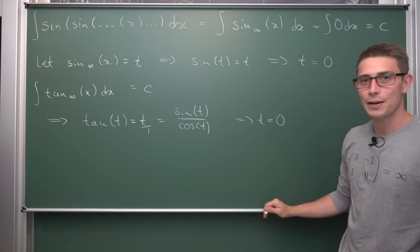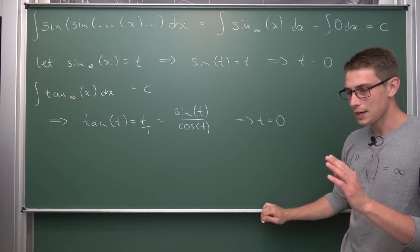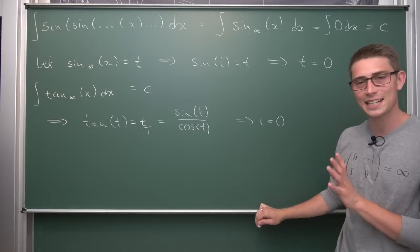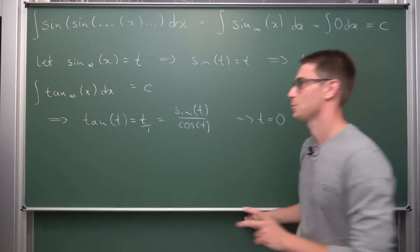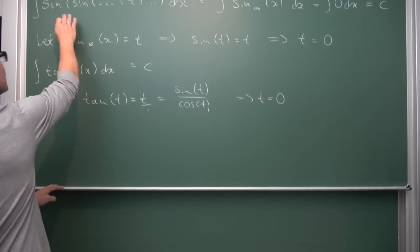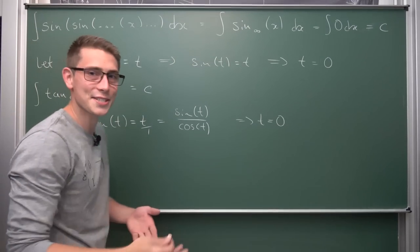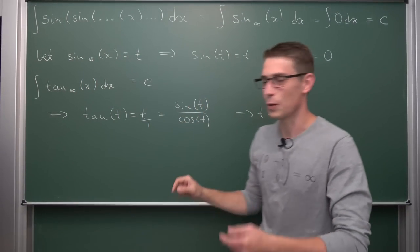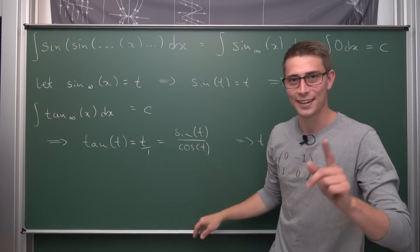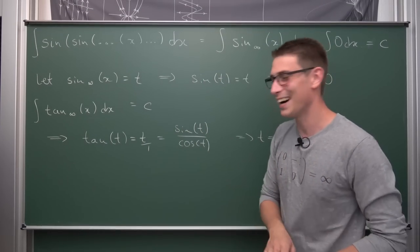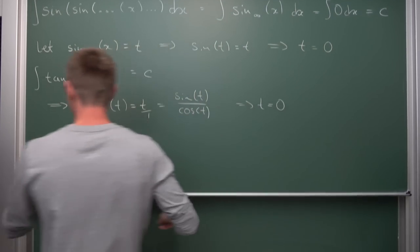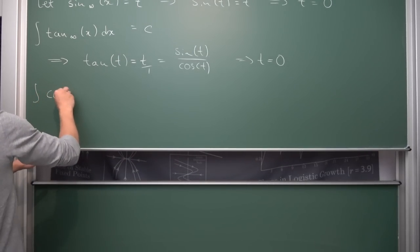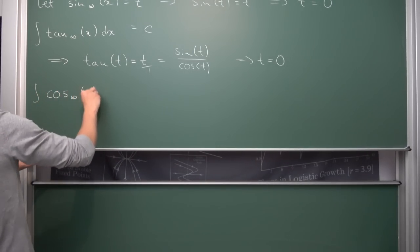Now here comes a very interesting one that I'll make several videos on later, because it's not a trivial matter. Namely, what about the little cousin? The cosine cousin — just infinitely nested. So cosine-infinity of x dx.